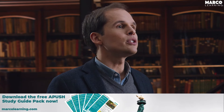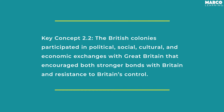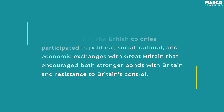During time period two, the foundations of the American Revolution were being laid. Key Concept 2.2 is all about how this was beginning to take place. The British colonies participated in political, social, cultural, and economic exchanges with Great Britain that encouraged both stronger bonds with Britain and resistance to Britain's control.